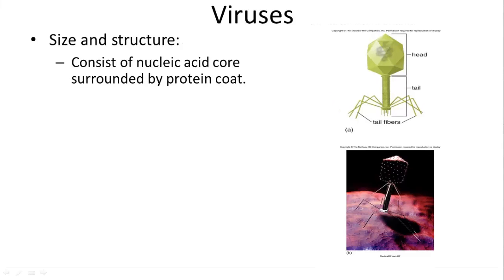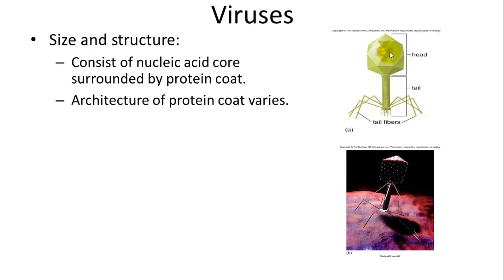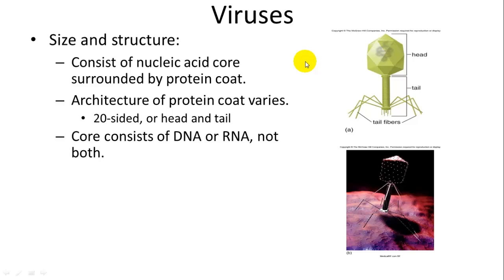Viruses consist of a nucleic acid core — either DNA or RNA — surrounded by a protein coat. This is a bacteriophage example. The protein coat varies: it can have a 20-sided head and a tail. Inside can be DNA, RNA, or both DNA and RNA.